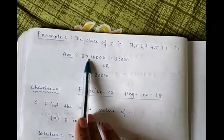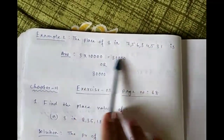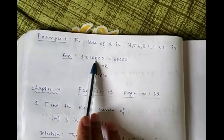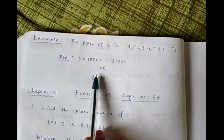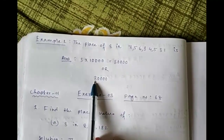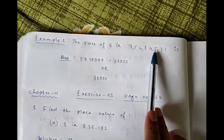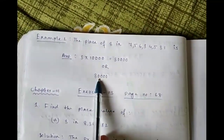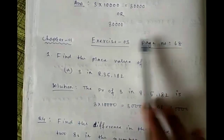Example 2: the place value of 3 in this number. We write 3 and multiply it by its place value, which is ten thousand. So 3 × 10,000 gives the result. Or simply, write 3 and put four zeros after it, since there are four digits after 3 in the number.